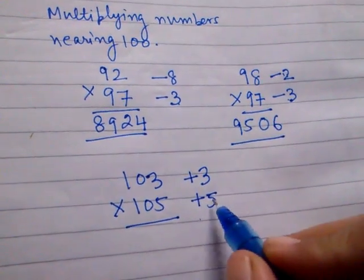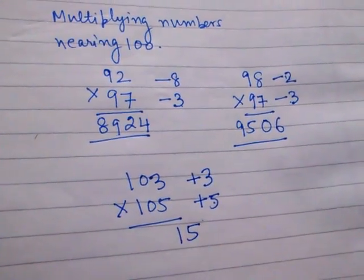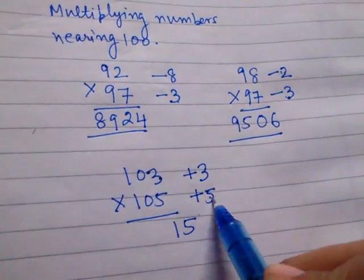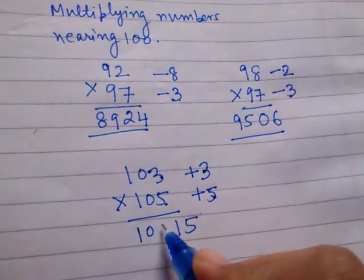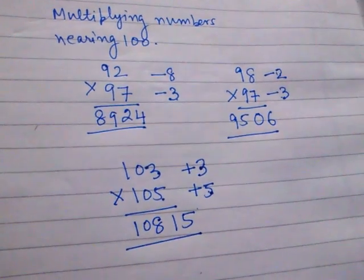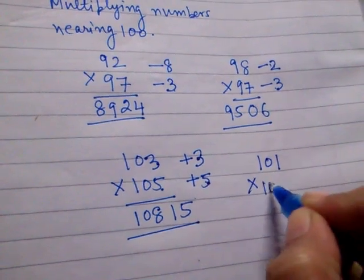Now apply the same process: 5 into 3 gives us the last two digits of the answer, and 103 plus 5, or 105 plus 3, gives me 108. So the answer is 10815.